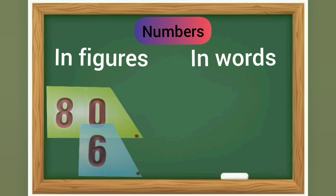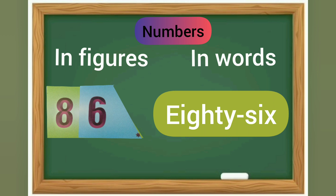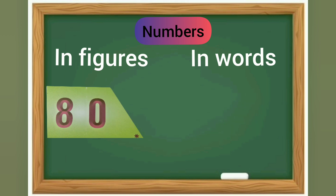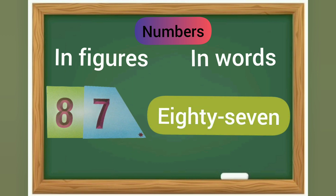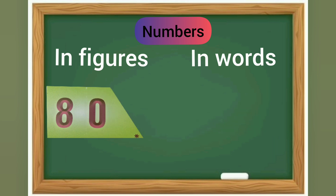80 and 6 is 86. In words it is E-I-G-H-T-Y S-I-X, eighty-six. 80 and 7 is 87. In words: E-I-G-H-T-Y S-E-V-E-N, eighty-seven. 80 and 8 is 88.